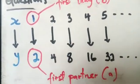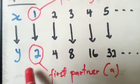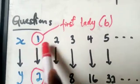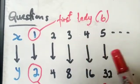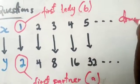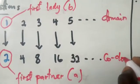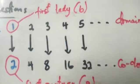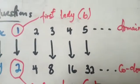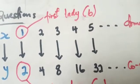So the y-values are the partners and the x-values are the ladies. In mathematical terms, the x-values form the domain and the y-values form the range (codomain). That is the difference between what I mean by the partners and the ladies.